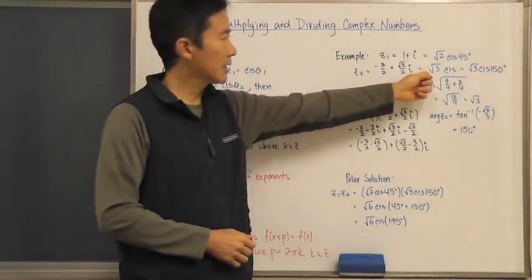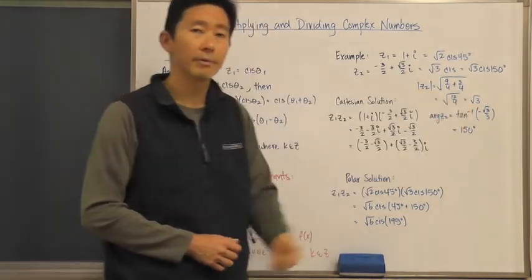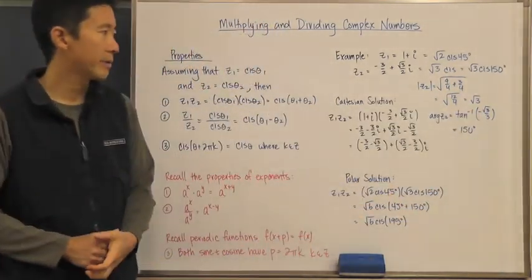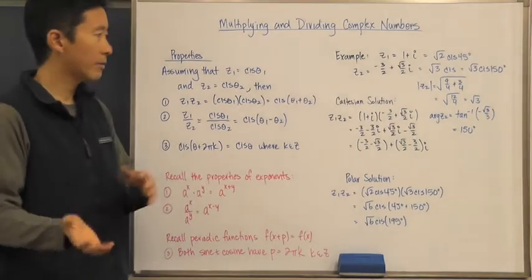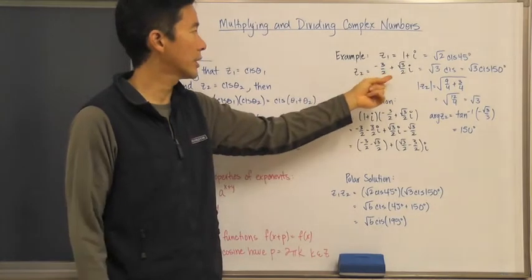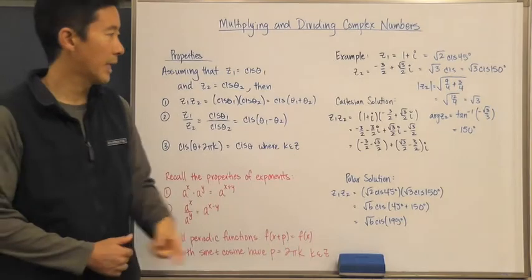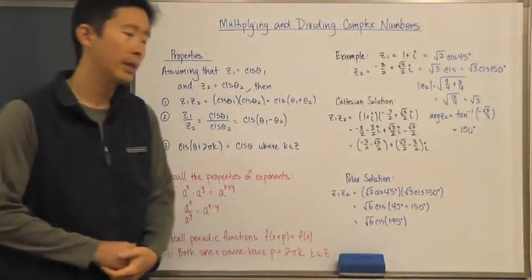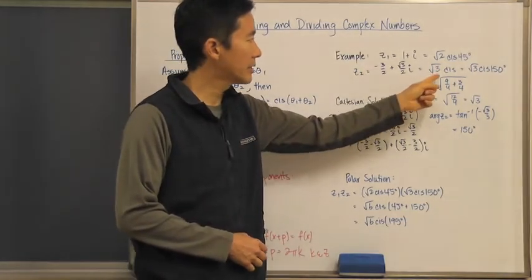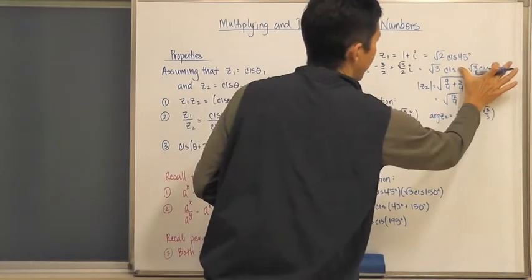For z₂, we need a bit more work. The modulus is √3, and the argument is the inverse tangent of negative √3 over 3. We check whether it's in the second or fourth quadrant — looking at the original form, it's in the second quadrant — so the argument is 150°. Therefore z₂ is √3 cis 150°.